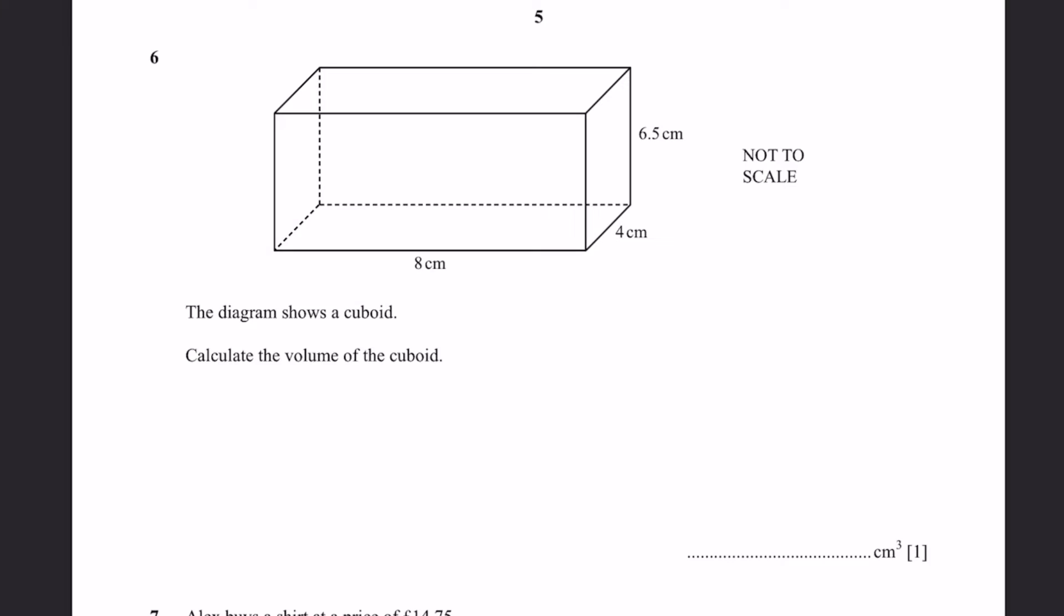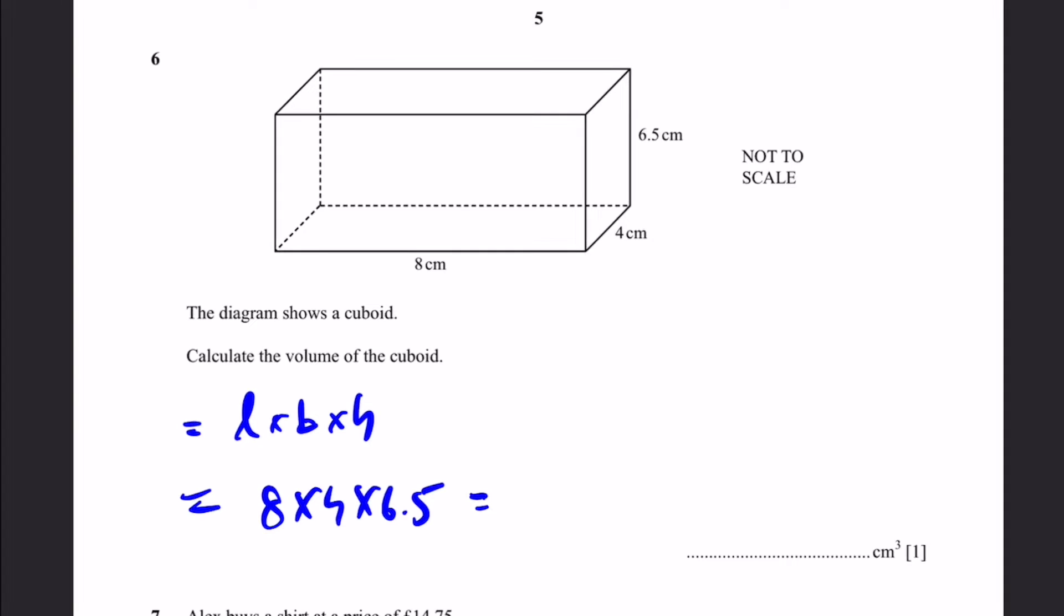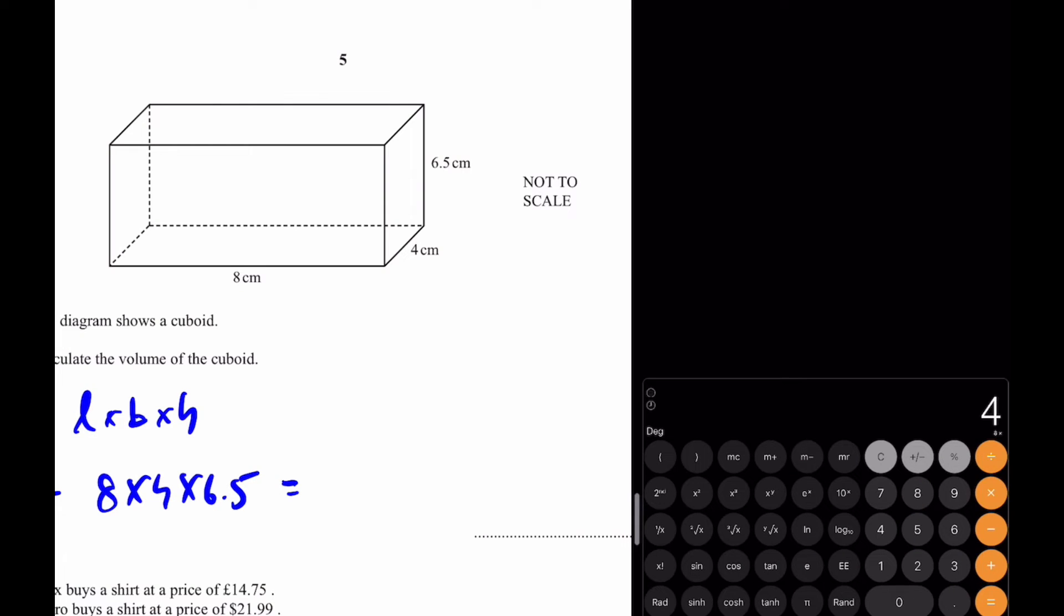Question 6: The diagram shows a cuboid, calculate its volume. That's simply the length times the breadth times the height. That's 8 times 4 times 6.5 which equals 208 centimeters cubed. That's the answer.